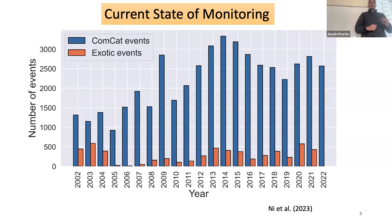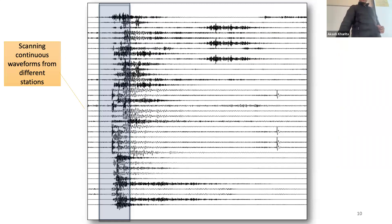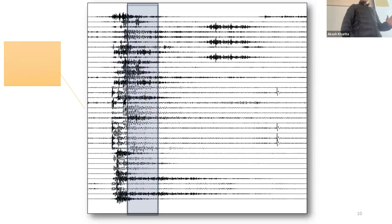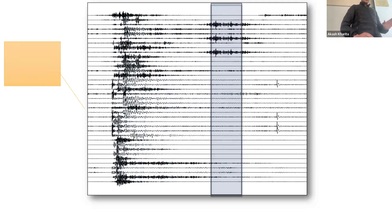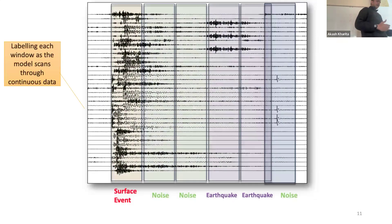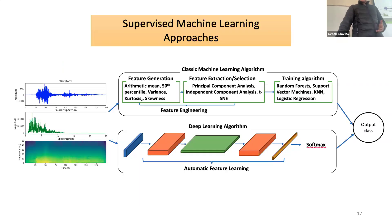The approach I envision is: we have waveforms from several stations, we run a continuous window, and as this window runs through the waveforms, it classifies each window based on its source type. I'm trying to use a supervised machine learning approach.